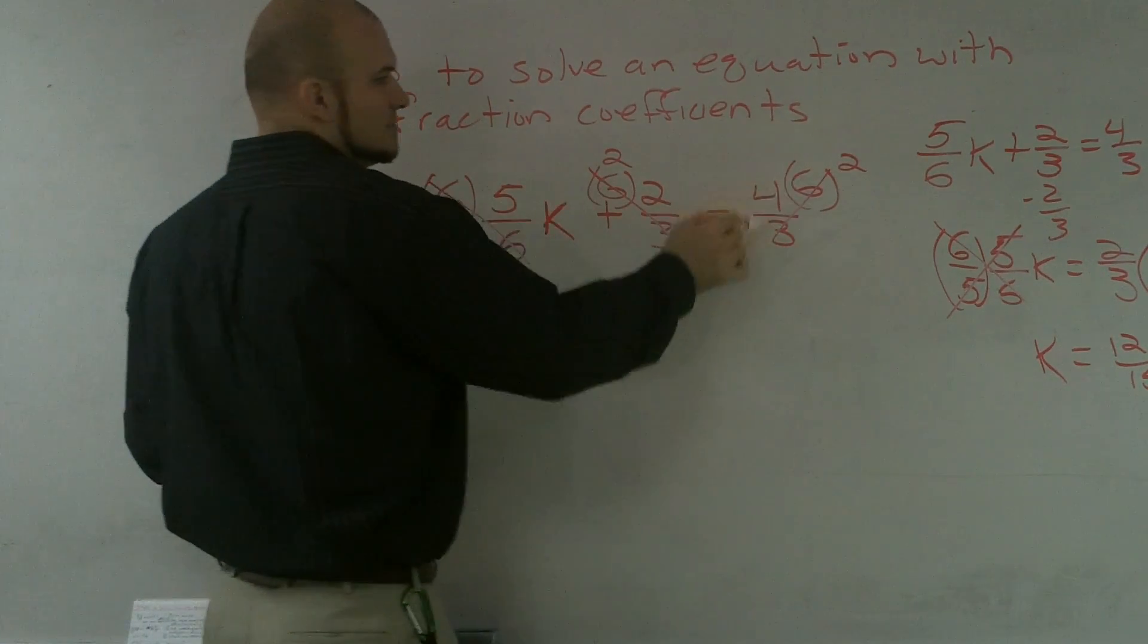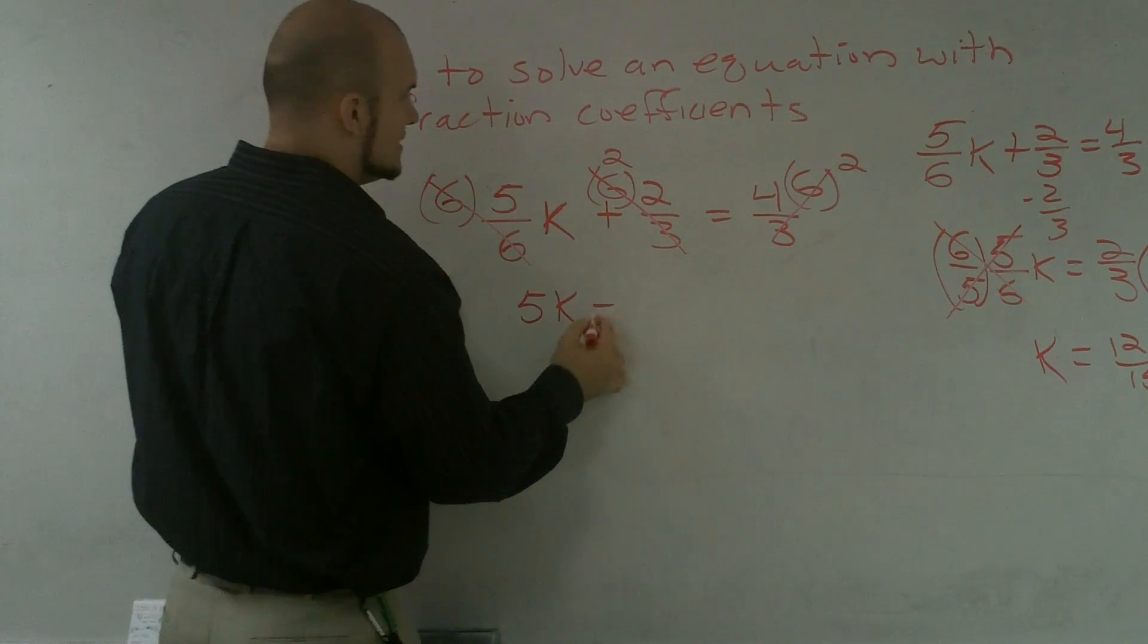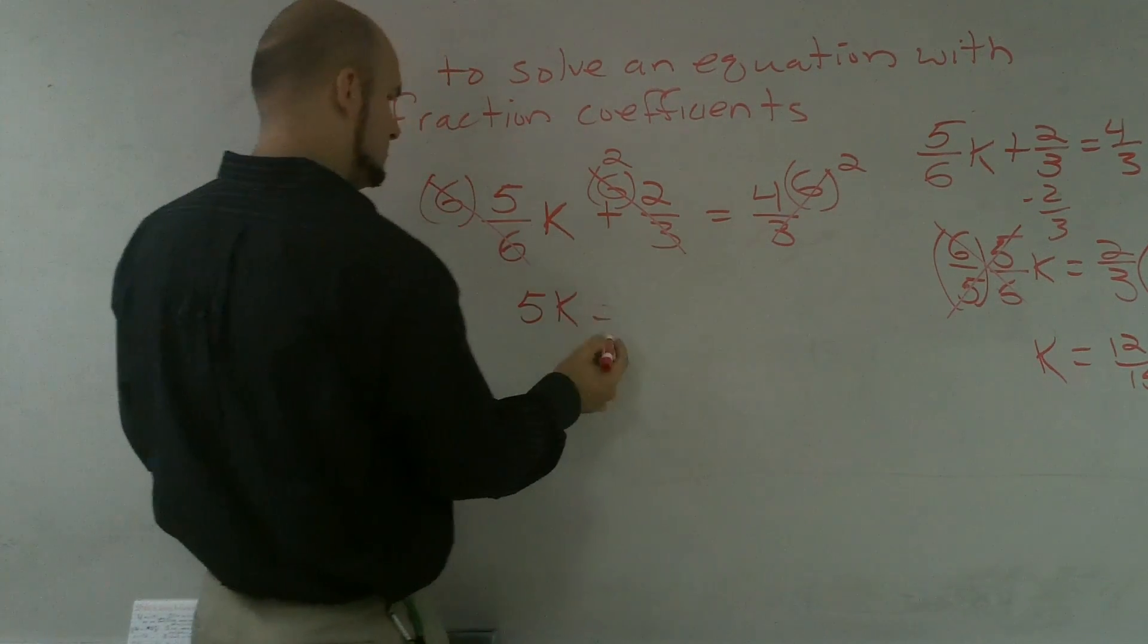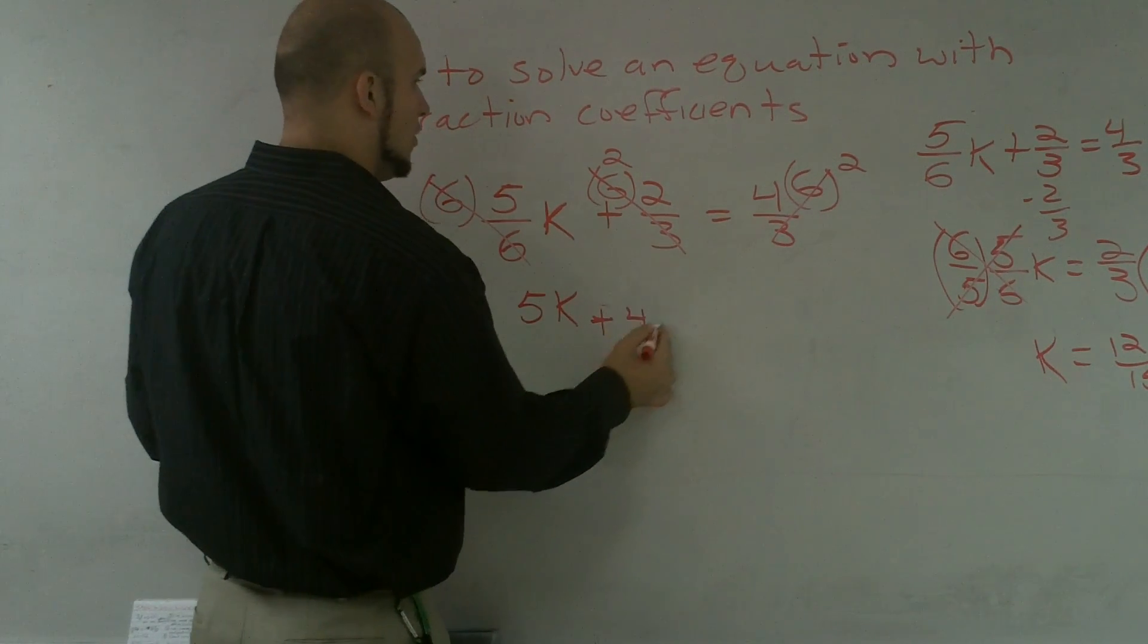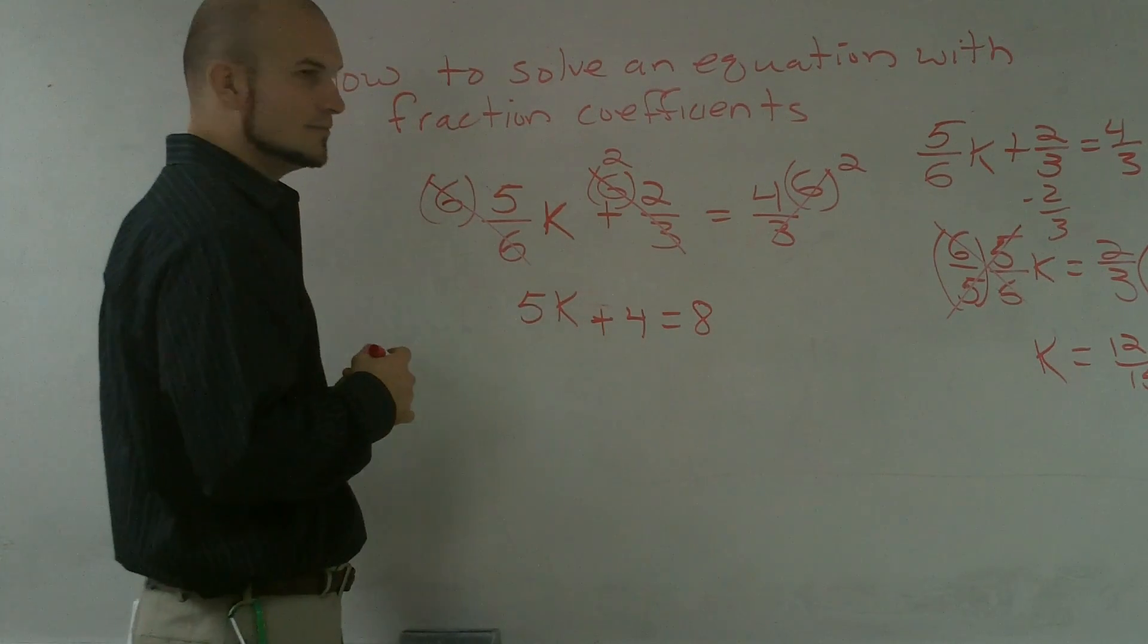Six divided by three is two. That's why I post that up there. So now I have five-k is equal to, I'm sorry, five-k plus four is equal to eight. All right?